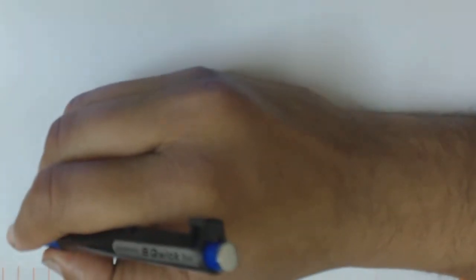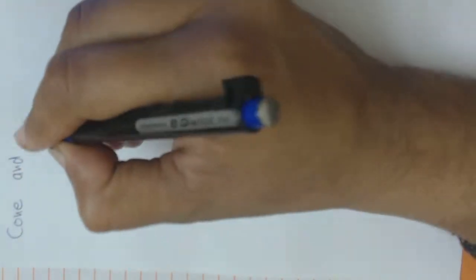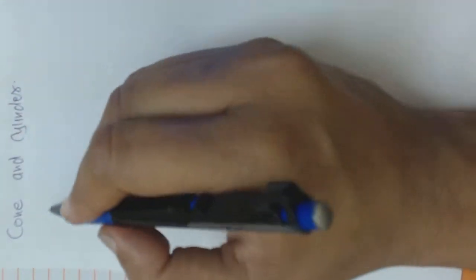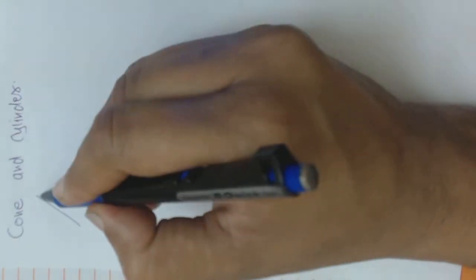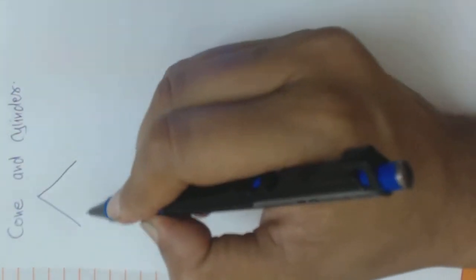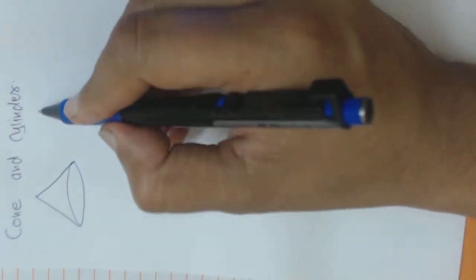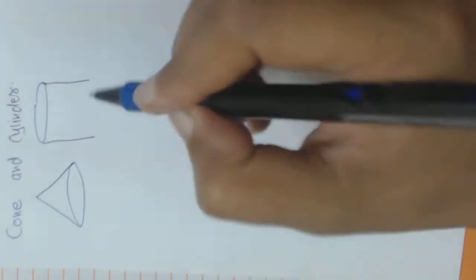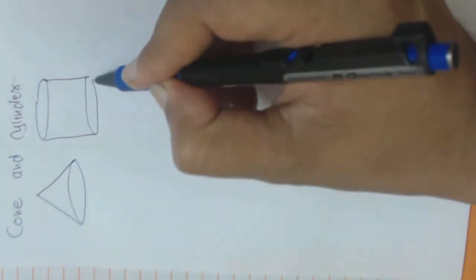So the topic for today, we are taking cone and cylinder. These are the two things I am taking today. The cone is something like this, and the cylinder when you draw the cylinder, it is like this.